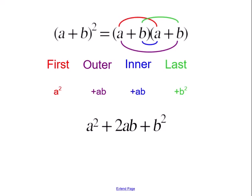I will show how the formulas are derived using FOIL again. (a + b)² expands to (a + b) times (a + b). When I multiply the binomials using FOIL—first, outer, inner, last—I get a² + ab + ab + b².